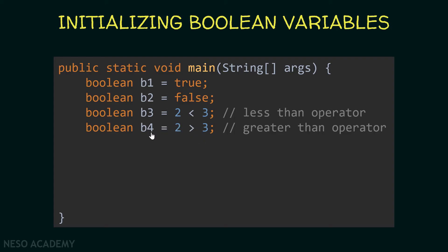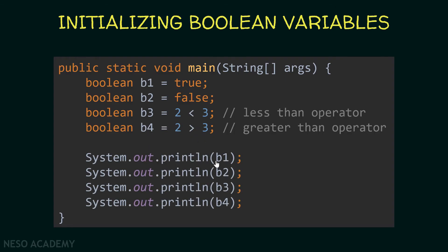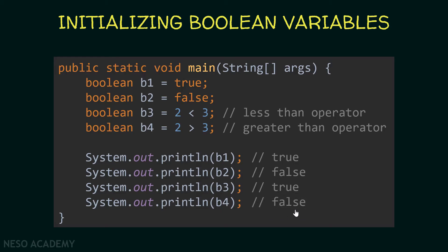If we print b1, b2, b3, and b4, we will see: true, because b1 is true; false, because b2 is false; true, because b3 is true since 2 is less than 3; and finally false, because b4 is false since 2 is not greater than 3.